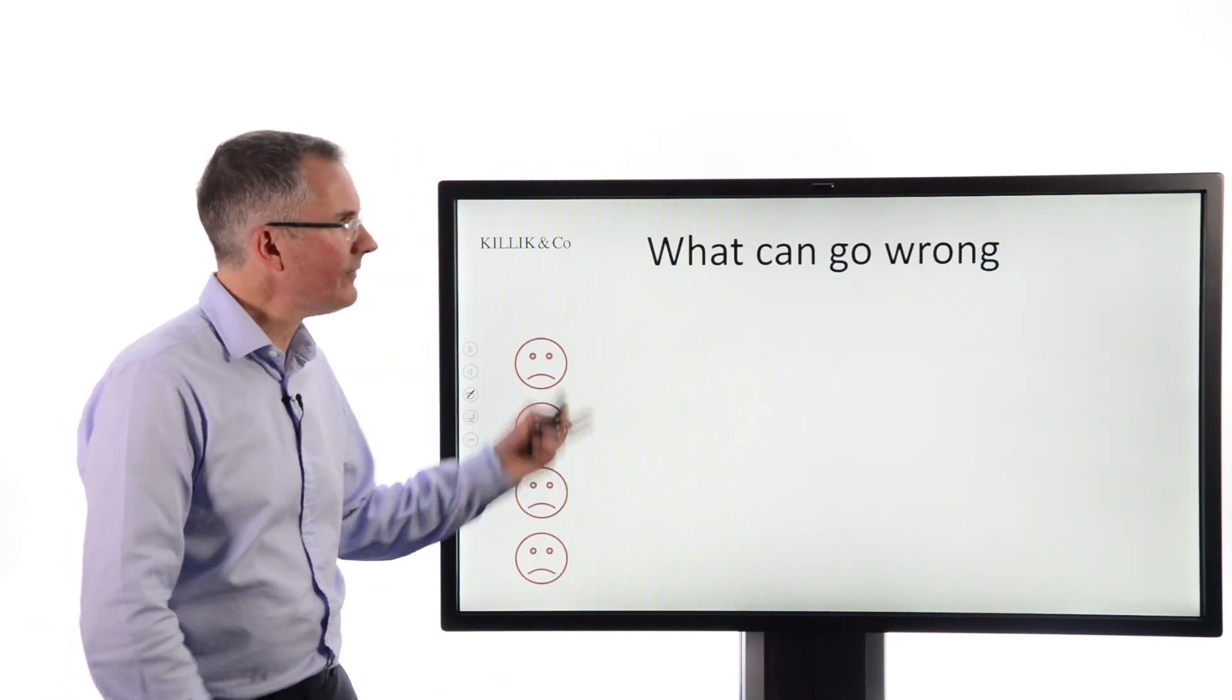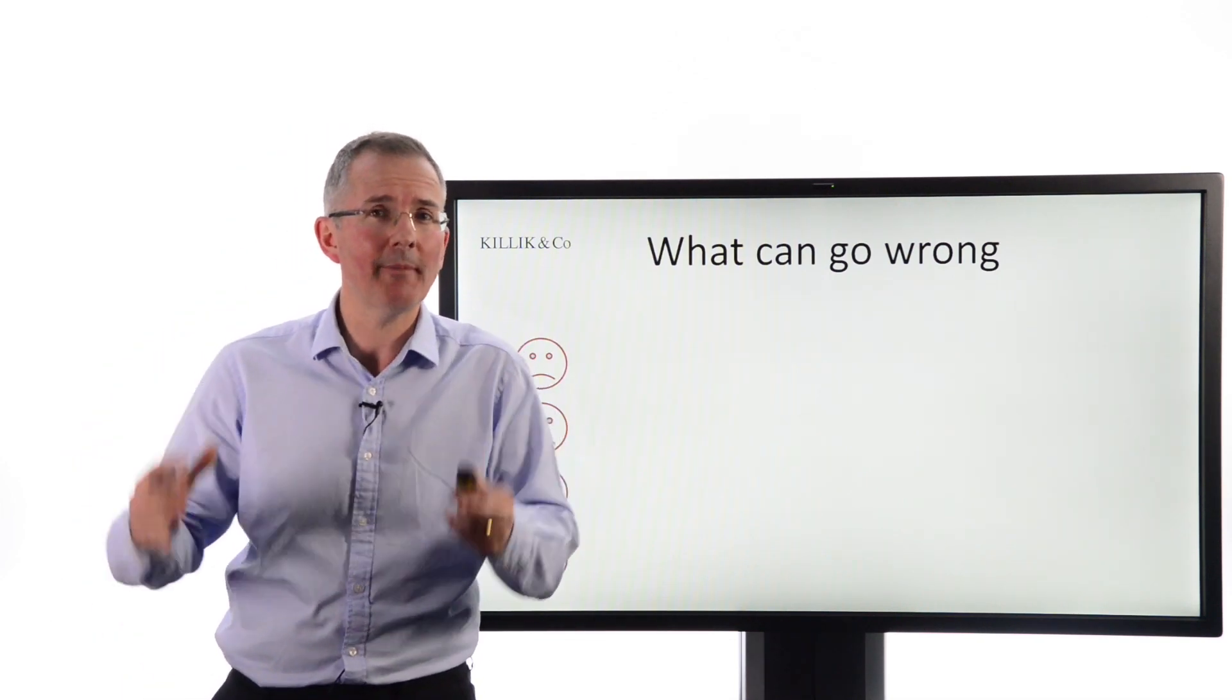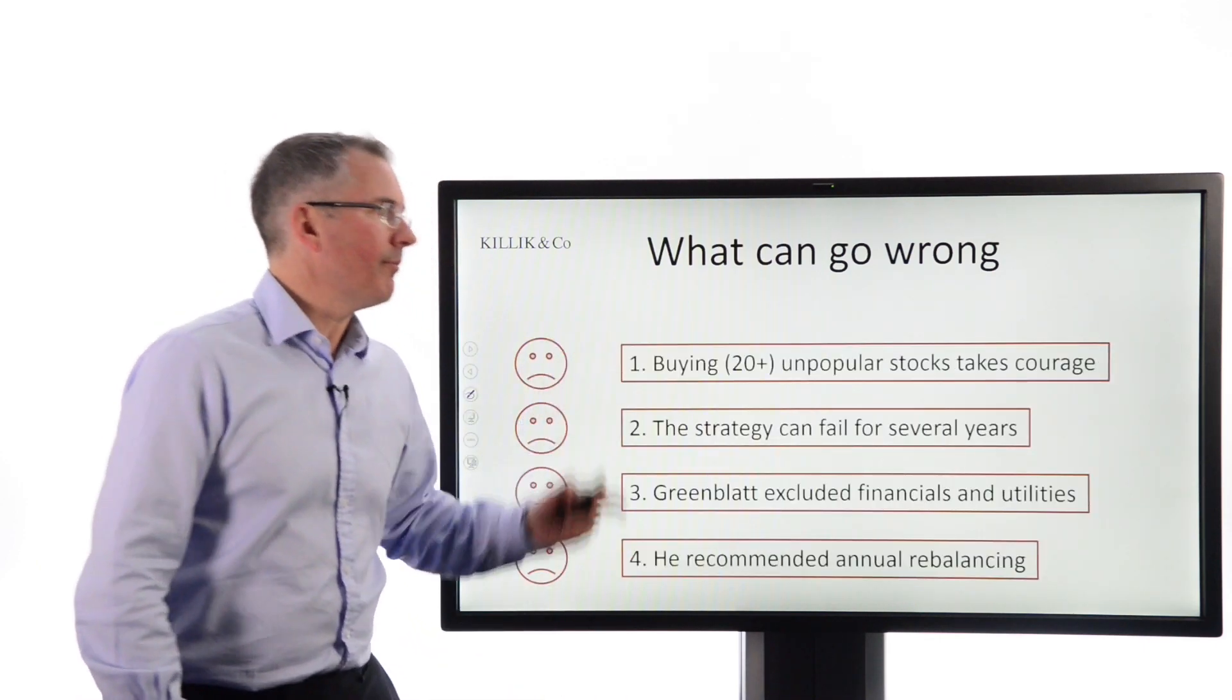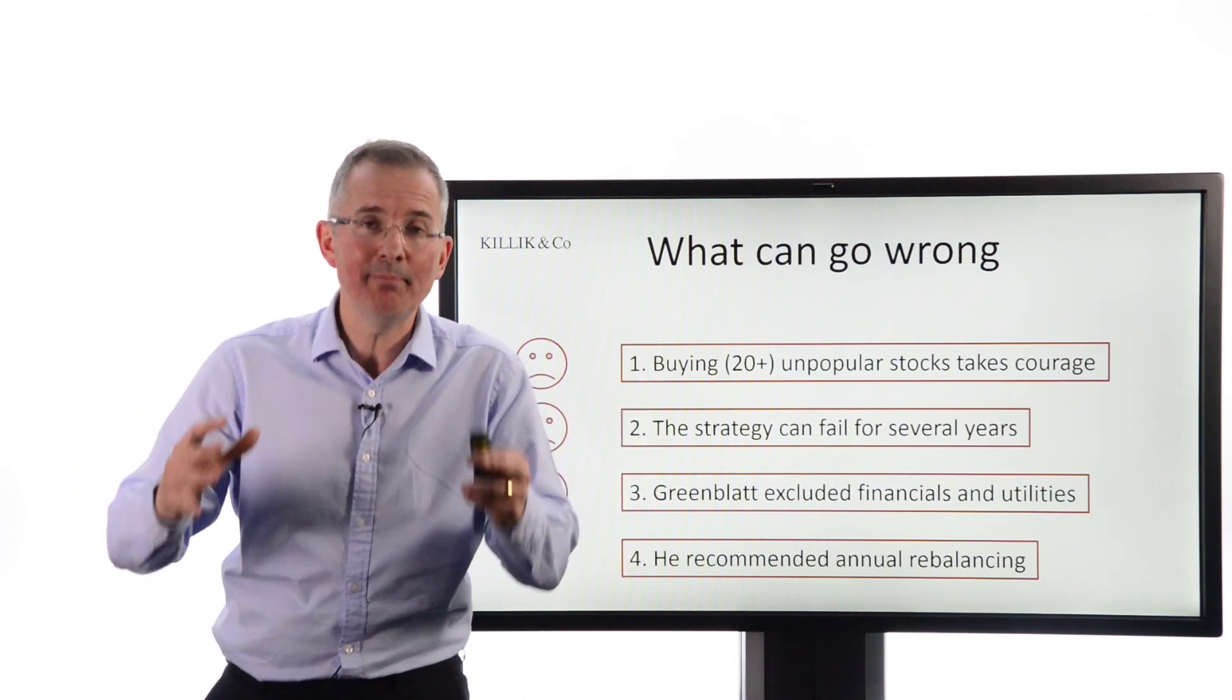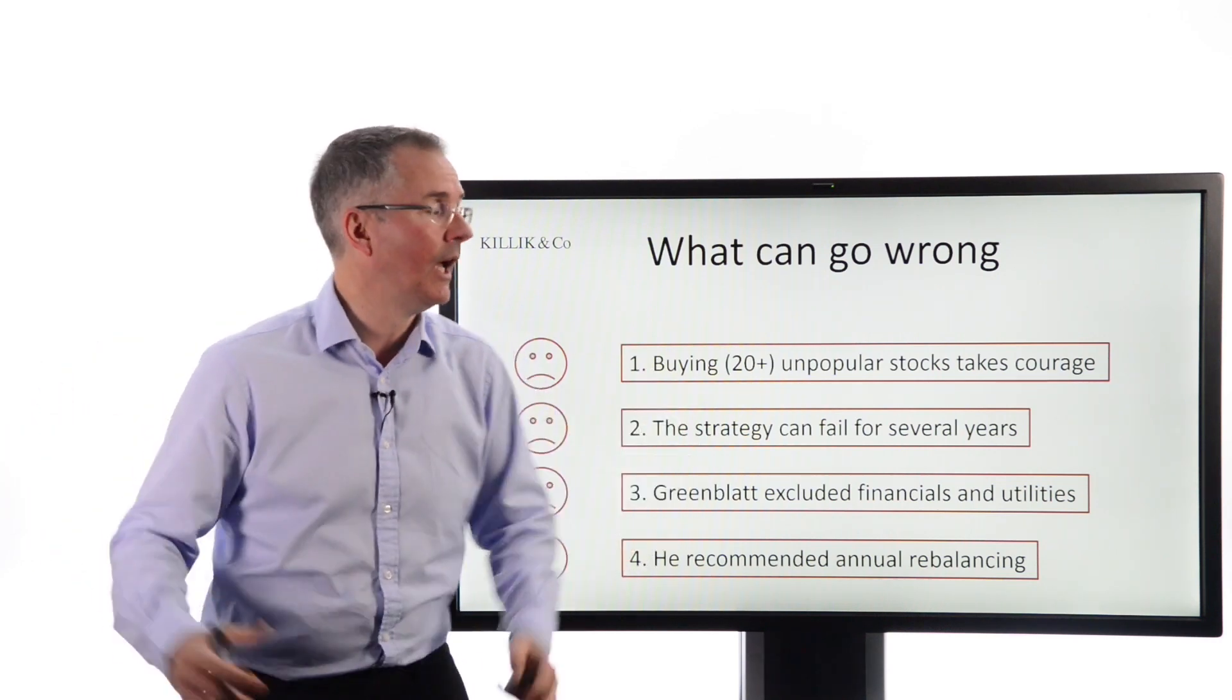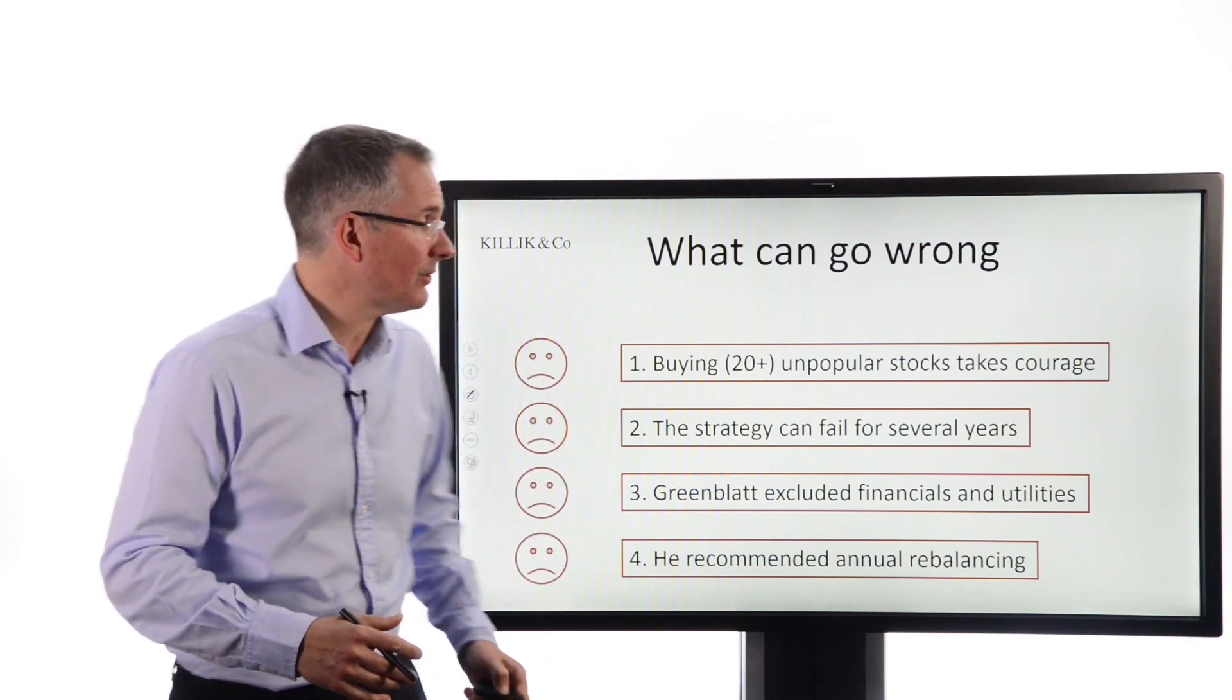Now, he claimed that he beat the market consistently over a certain period using this method, but it does have its drawbacks. And let's look at some of the key ones. First of all, you've got to be the kind of person that's prepared to buy out of favour, unpopular stocks. The whole process is built on buying a portfolio of stuff that other people have overlooked. And that's not something that people can necessarily do and stick with as a strategy.